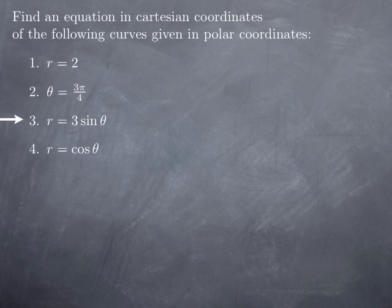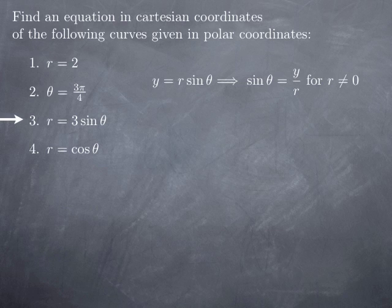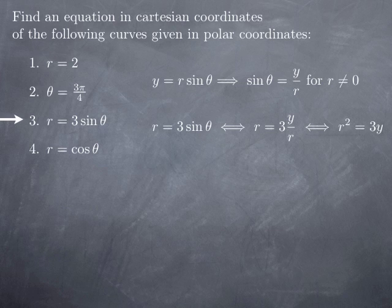What about the curve r=3sinθ? Let's calculate the Cartesian coordinates and see if we recognize a known curve. We know y=r·sinθ, so sinθ=y/r (when r≠0). Substituting into r=3sinθ gives r=3y/r, and multiplying both sides by r yields r²=3y. Since r²=x²+y², we get x²+y²=3y.